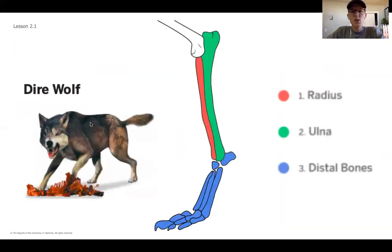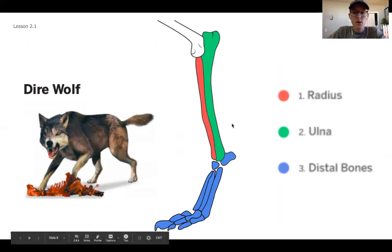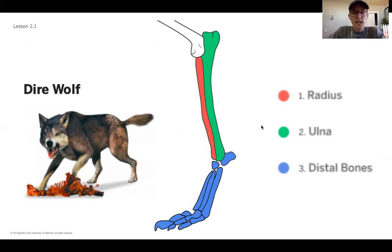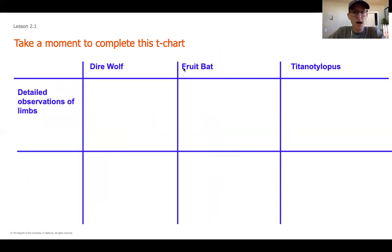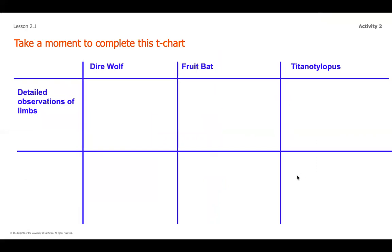I'm going to slowly click through each of the next few slides, which are going to have the specific species with the front limbs blown up so you can see the details and be specific in your observations. This is our wolf — feel free to pause the video right now and fill in that first box for the wolf. Then you're going to make observations on the fruit bat, and then on the titanolophus. Feel free to pause, take your time, fill in your T-chart, and make as many observations as you think are important. More observations are better, and make sure you are being as detailed as possible in the language you use to describe what you see.